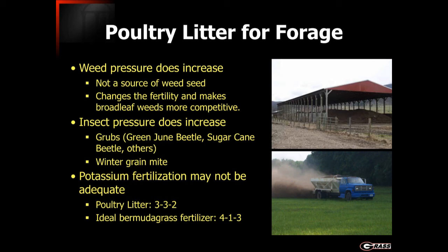Another challenge with poultry litter is potash fertility. Poultry litter generally has relatively little potash, averaging about a 3-3-2 equivalent fertilizer ratio, whereas the ideal bermudagrass fertilizer ratio is more like 4-1-3. So we need more balance between potash and nitrogen than we typically get with poultry litter or other types of animal waste.